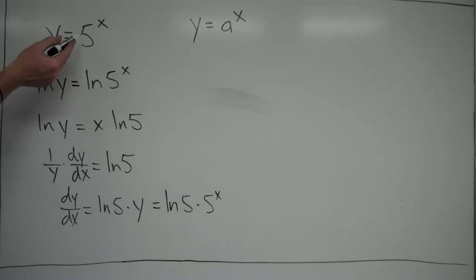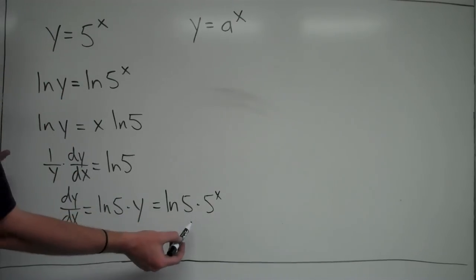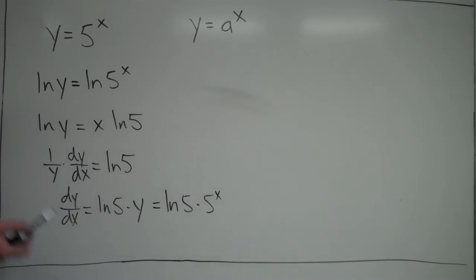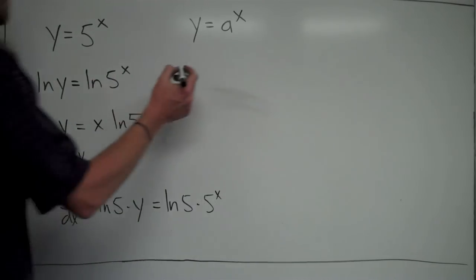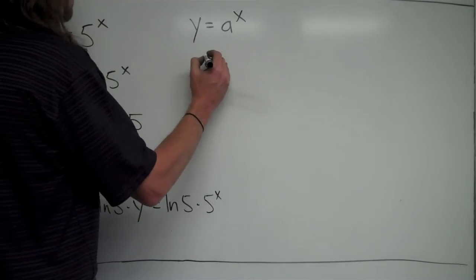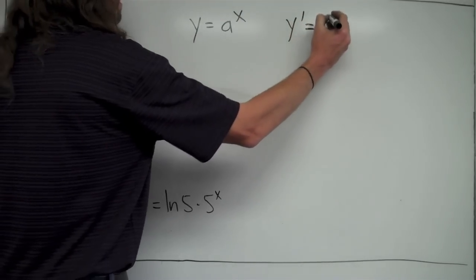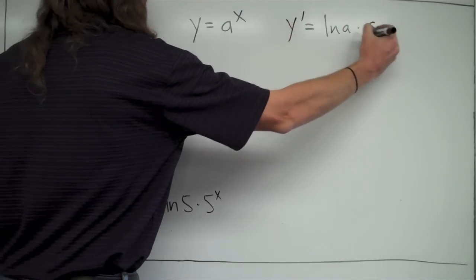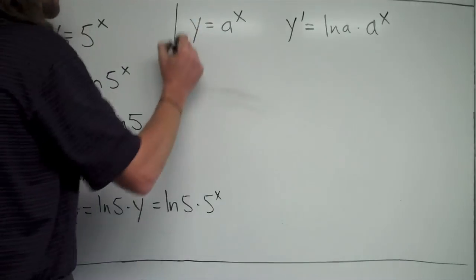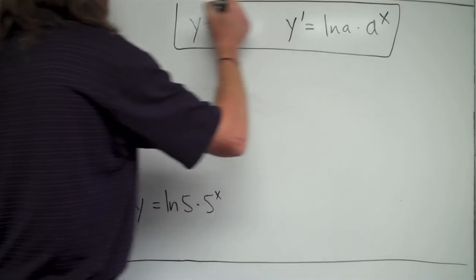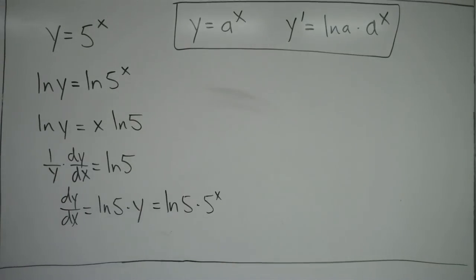And if I were to replace a with 5 and go through this whole thing, I would just end up at the end with natural log of a times a to the x. So the derivative in general is just natural log of a times a to the x. That's the general rule for this derivative of other bases.